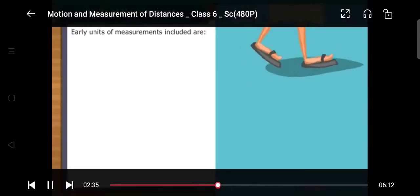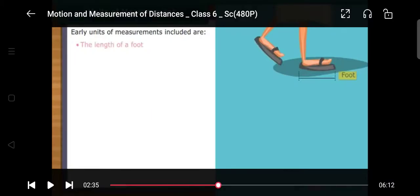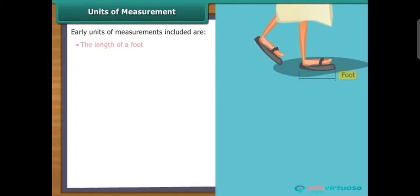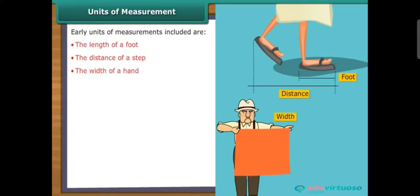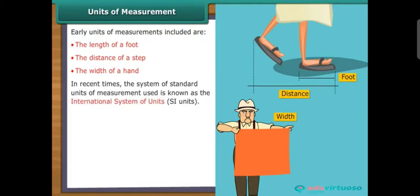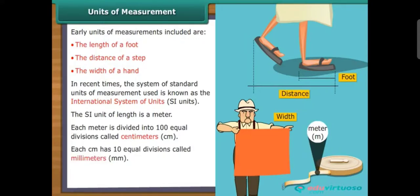Units of measurement — in the early days, units of measurement included the length of a foot, the distance of a step, and the width of a hand. However, these were difficult to maintain as the length of a foot would vary from person to person. To standardize the units, a metric system was put in place. This system is a standard unit of measurement, and it is now known as the International System of Units, or SI units. The SI unit of length is a meter. Each meter is divided into 100 equal divisions called centimeters, or cm. Each centimeter has 10 equal divisions called millimeters, or mm.